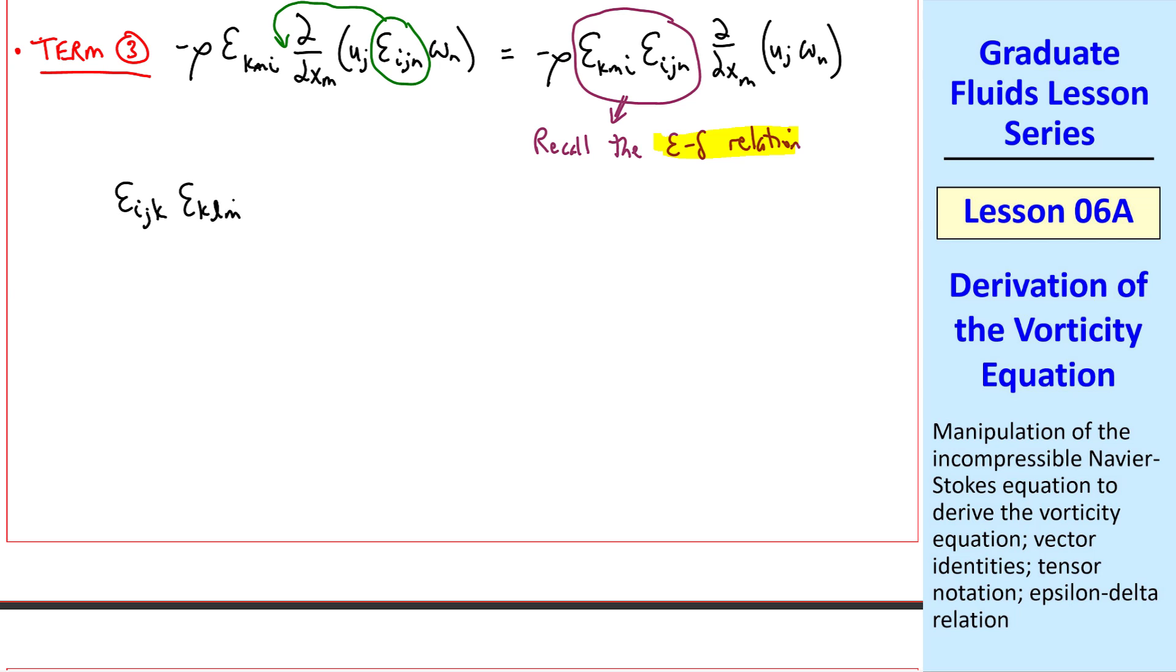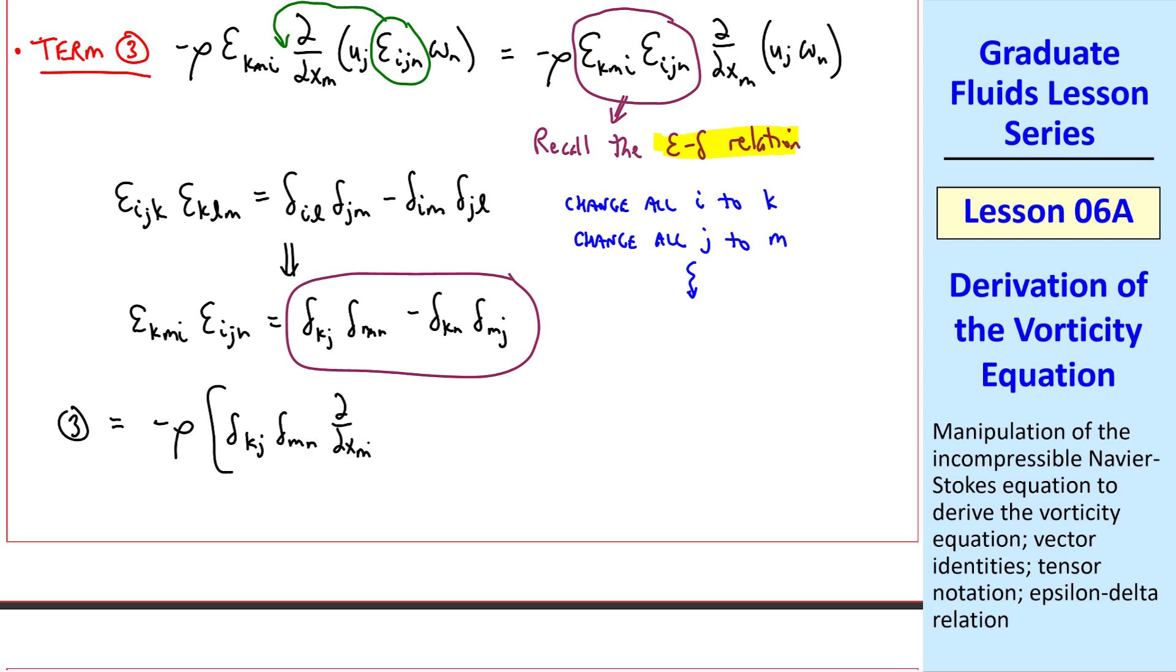We had written it as epsilon ijk, epsilon klm, equal delta il, delta jm, minus delta im, delta jl. But we could use different indices here if we're careful. Namely, let's change all i to k, and change all j to m, etc. So another way to write this is epsilon kmi, epsilon ijn, equal delta kj, delta mn, minus delta kn, delta mj. So this grouping circled in purple can be written as this instead. So term 3 can be written as minus rho, delta kj, delta mn, delta xm, uj omega n, minus delta kn, delta mj, delta xm, uj omega n.